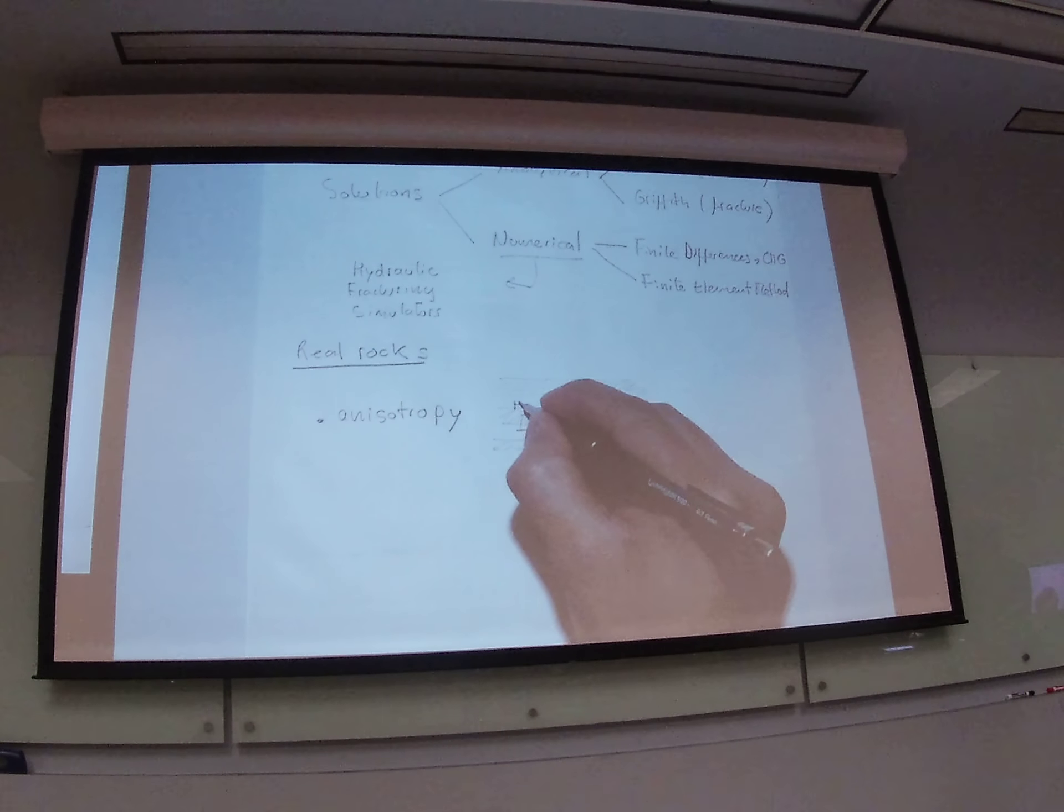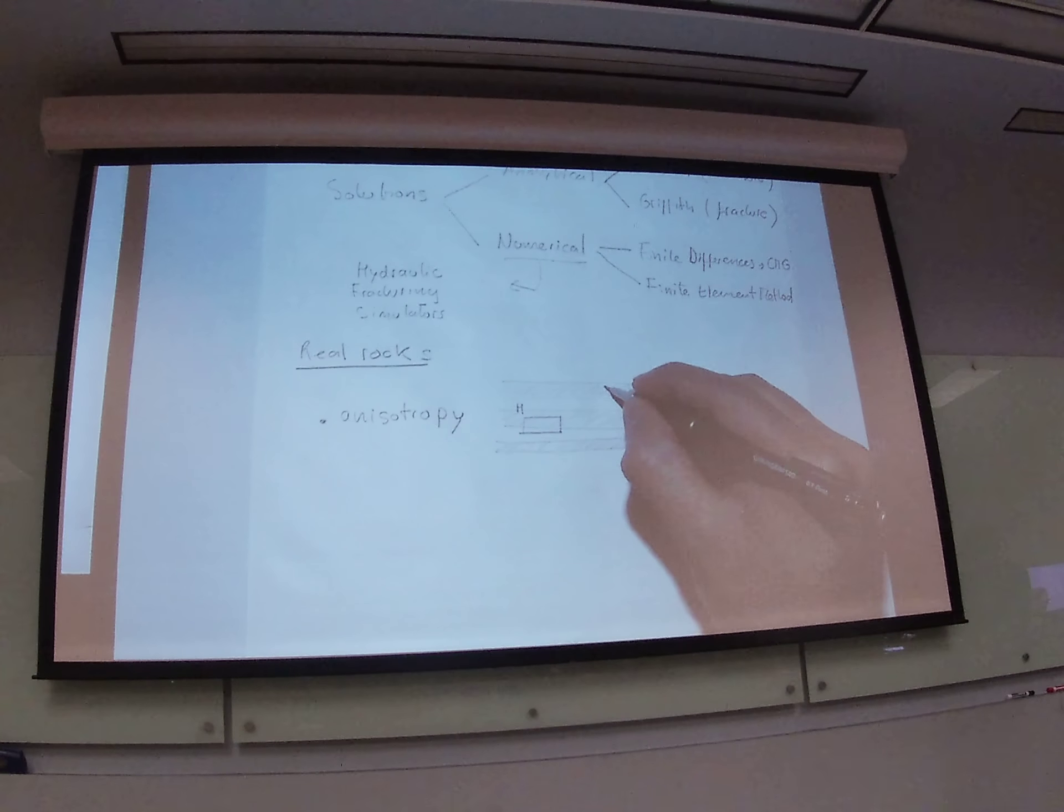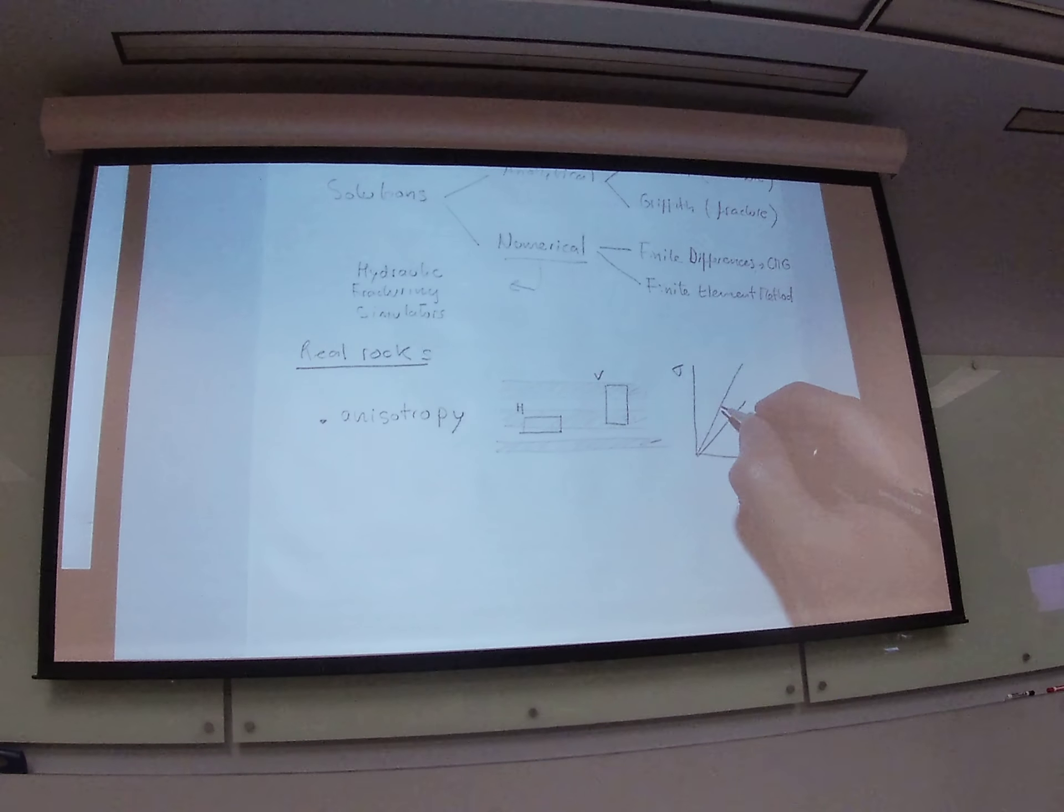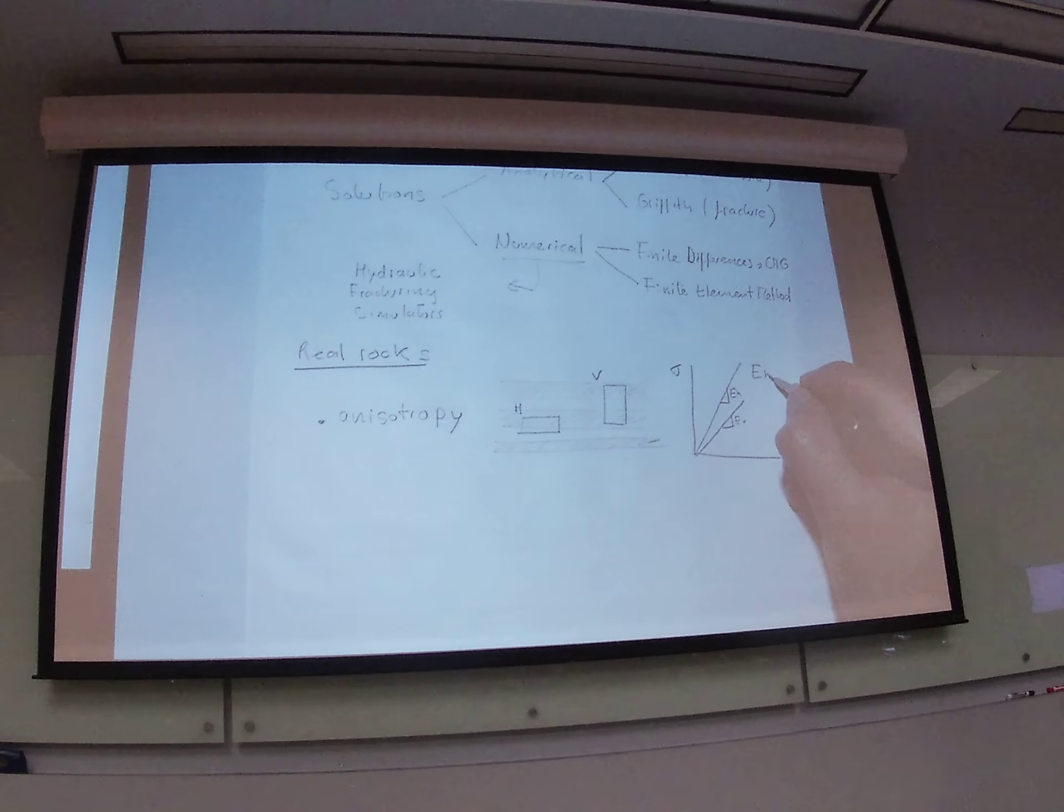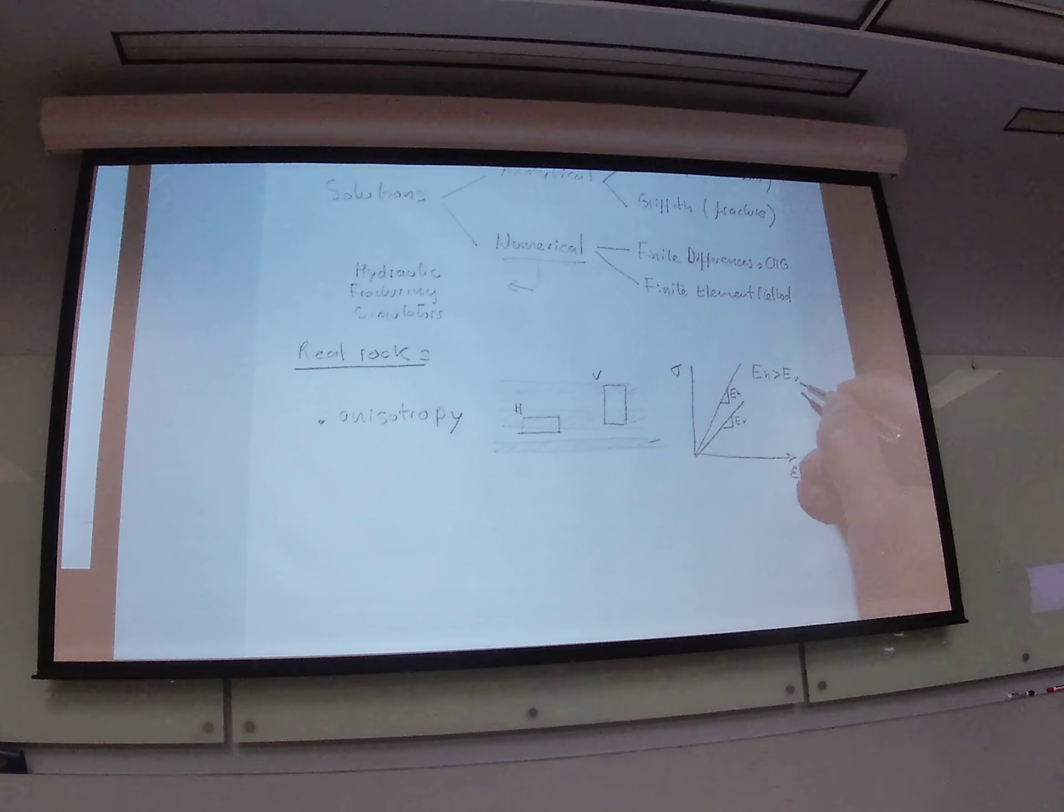You tend to see that rocks are stiffer in the horizontal direction. If I were to take a sample of this rock and another sample here, this is horizontal, it will be vertical with respect to bedding. You will tend to see that the horizontal rocks tend to be stiffer than vertical rocks. So the Young modulus in horizontal direction tends to be higher than the Young modulus in vertical direction.